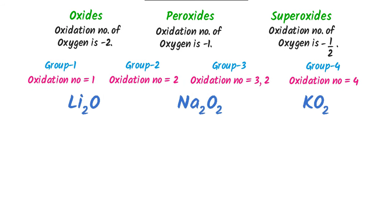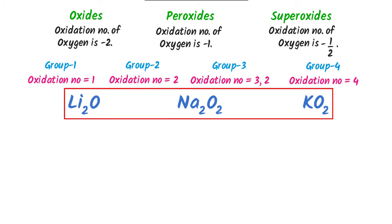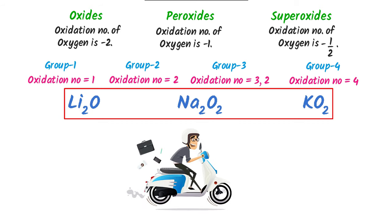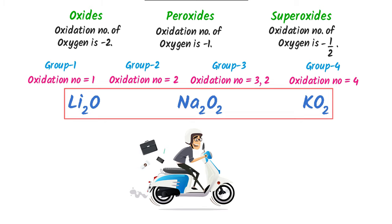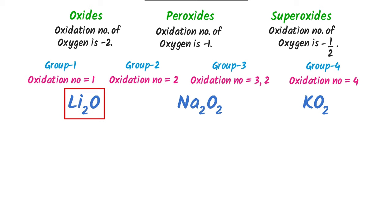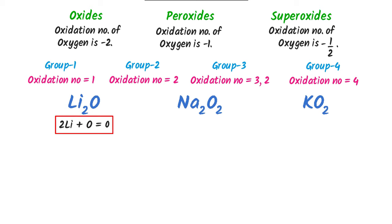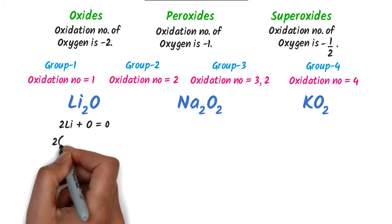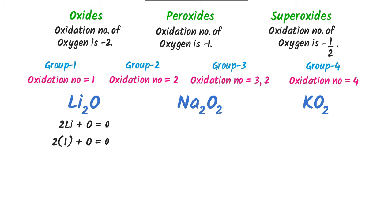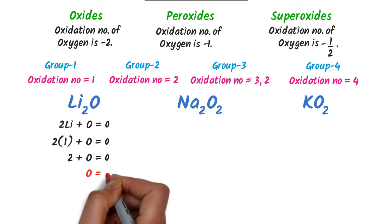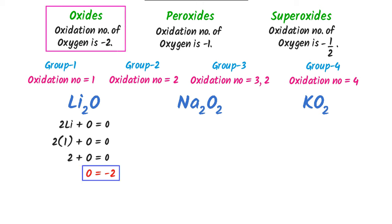Now consider these compounds. I will teach you my personal and super easy trick to find oxides, peroxides and superoxides. In this compound, there are 2 atoms of lithium and 1 atom of oxygen. So I write: 2(lithium) + oxygen = 0. Since lithium is a group 1 element, its oxidation state is +1, so 2(1) + oxygen = 0, giving oxygen = −2. The oxidation state of oxygen is −2, thus this compound is oxide.